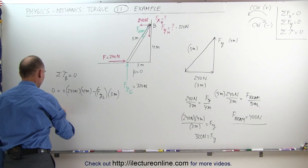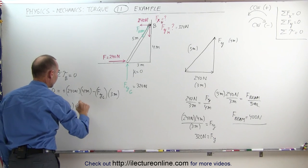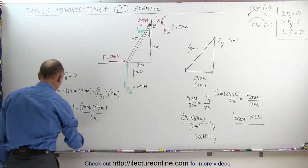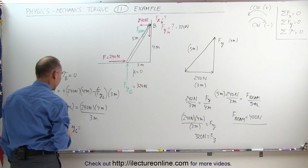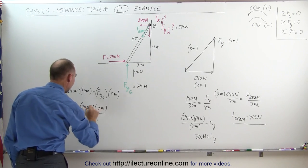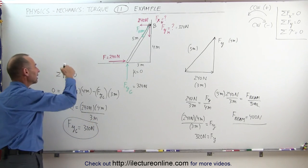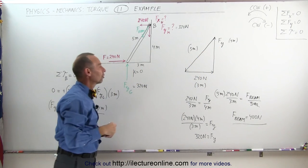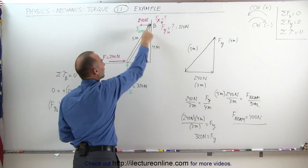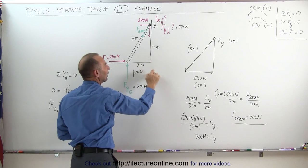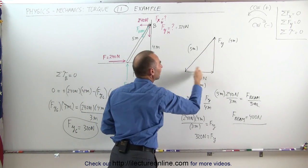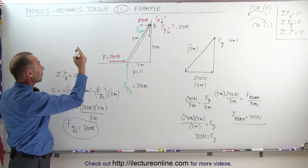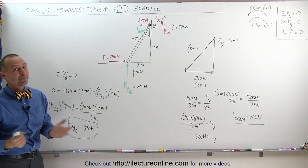Moving terms to the other side: F sub y at the ground times 3 meters equals 240 newtons times 4 meters. Dividing both sides by 3 meters, the force in the y direction at the ground equals 80 times 4, which is 320 newtons — the same answer as before. The torque methodology gives the exact same result as the triangular force summation method. Whenever forces acting on an object form a triangular shape, the magnitudes of those forces are proportional to the lengths of the legs of the triangle. That's the relationship between solving via torque versus the triangular method.